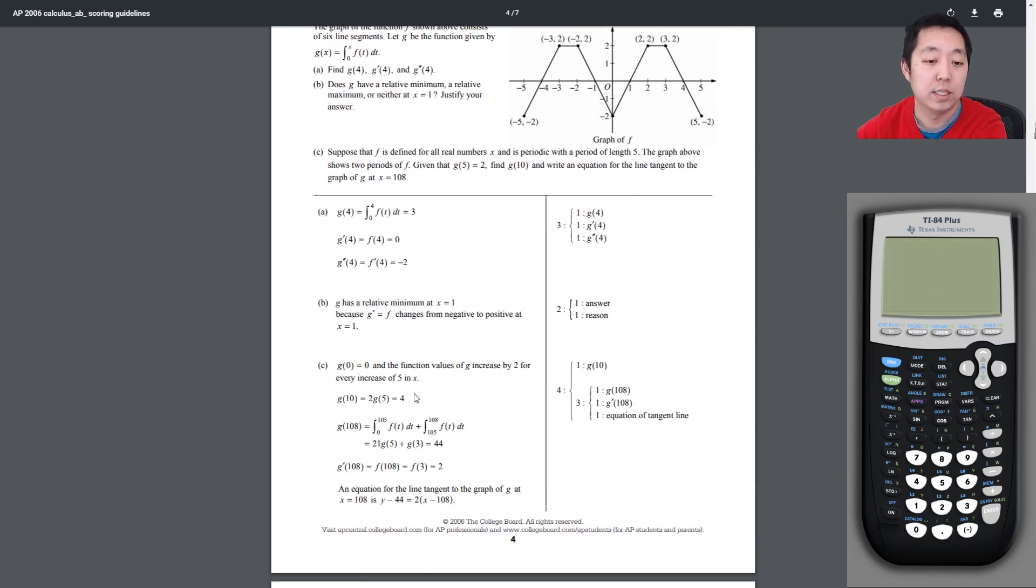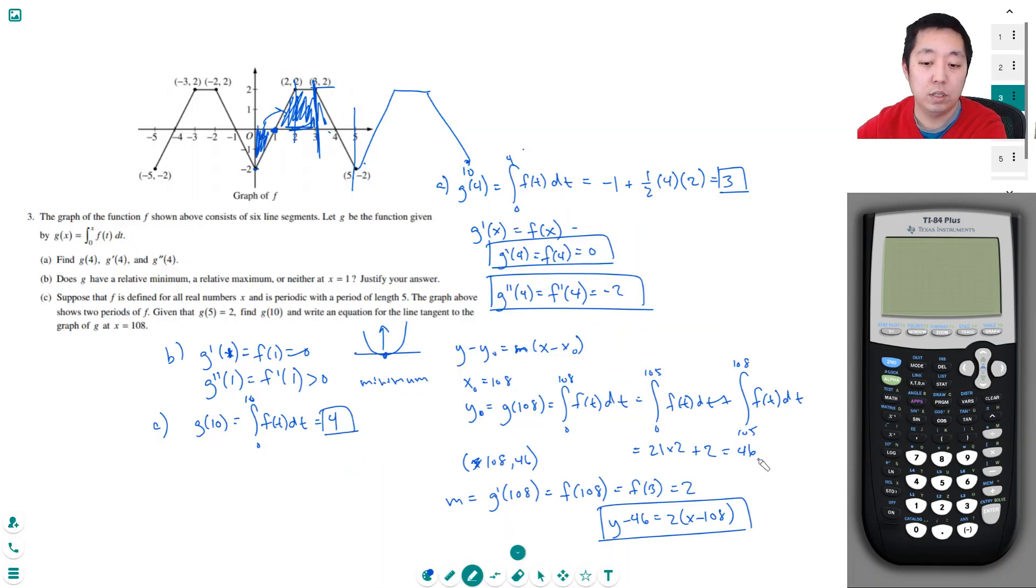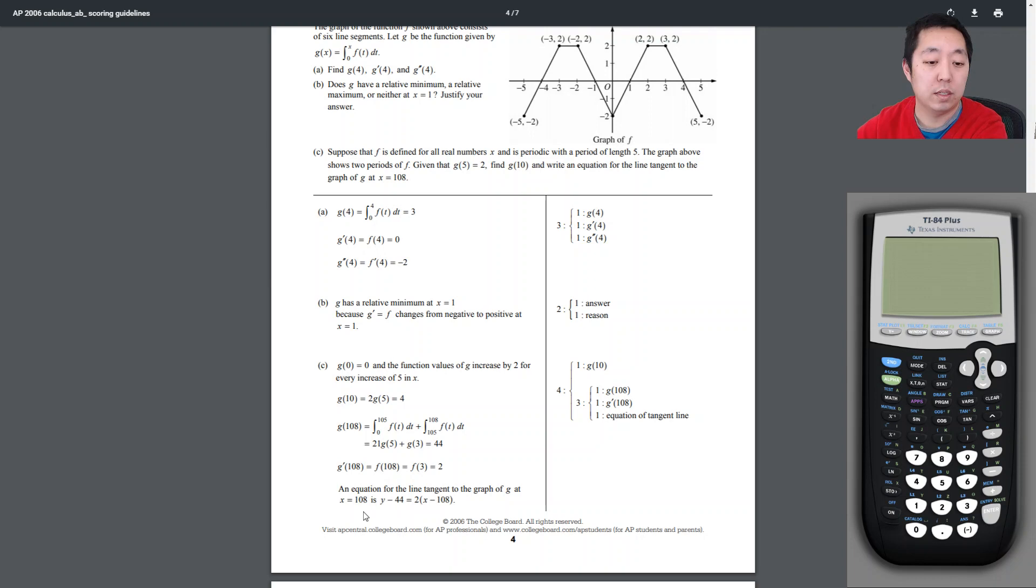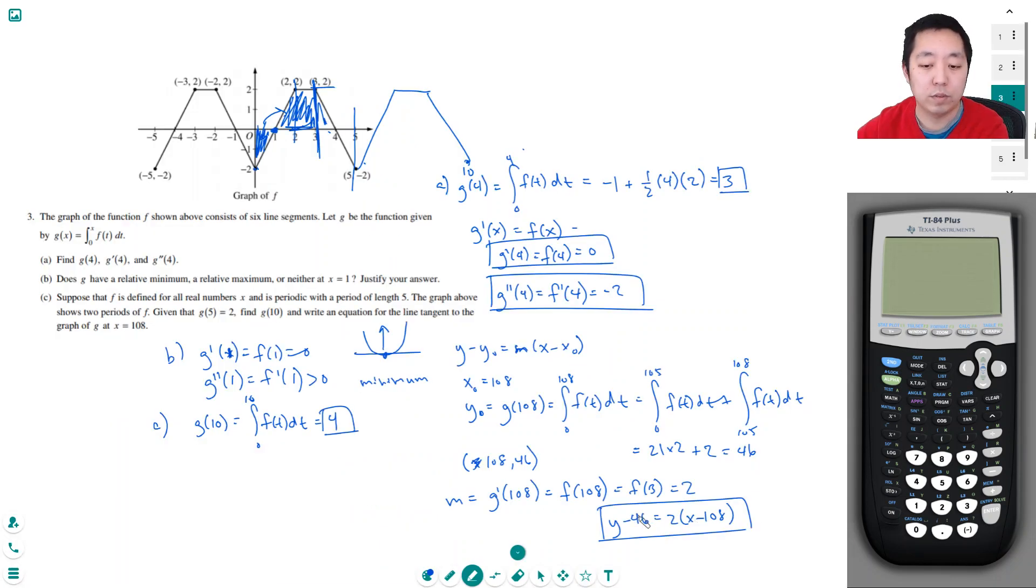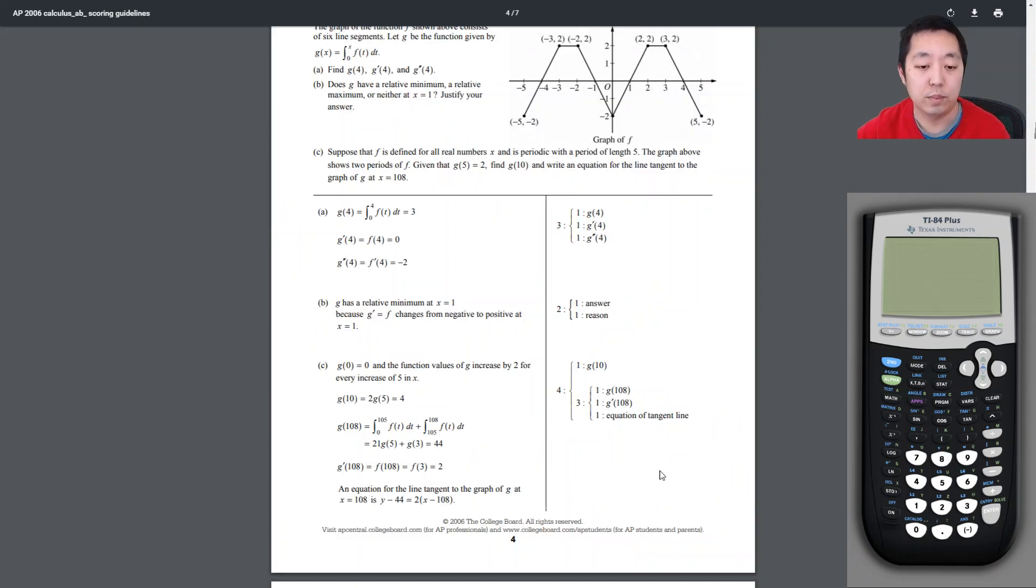g of 10 is 4, so I found 4. And then y minus 44 is equal to 2 times x minus 108. Oh 44, did I do this wrong? Oh this is 42 plus 2, I should use a calculator, this is 44. Okay so minor arithmetic mistake.